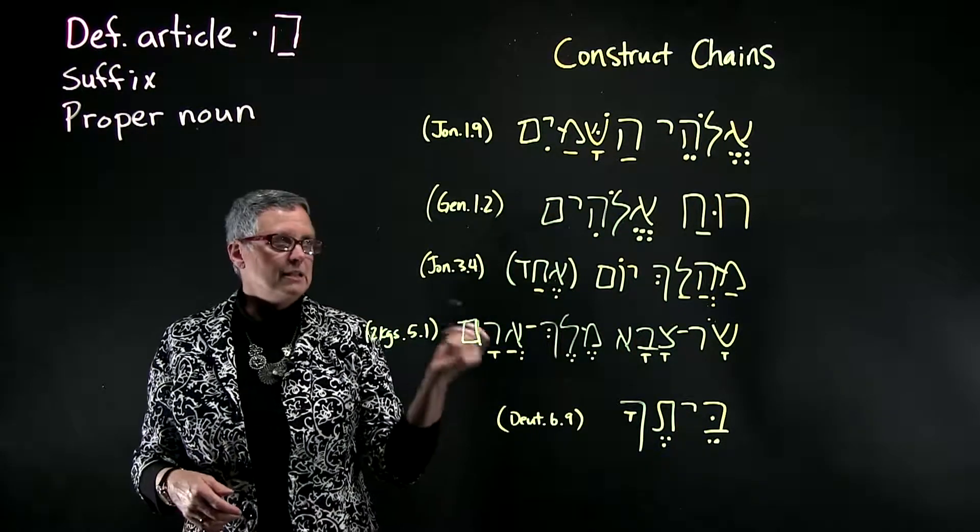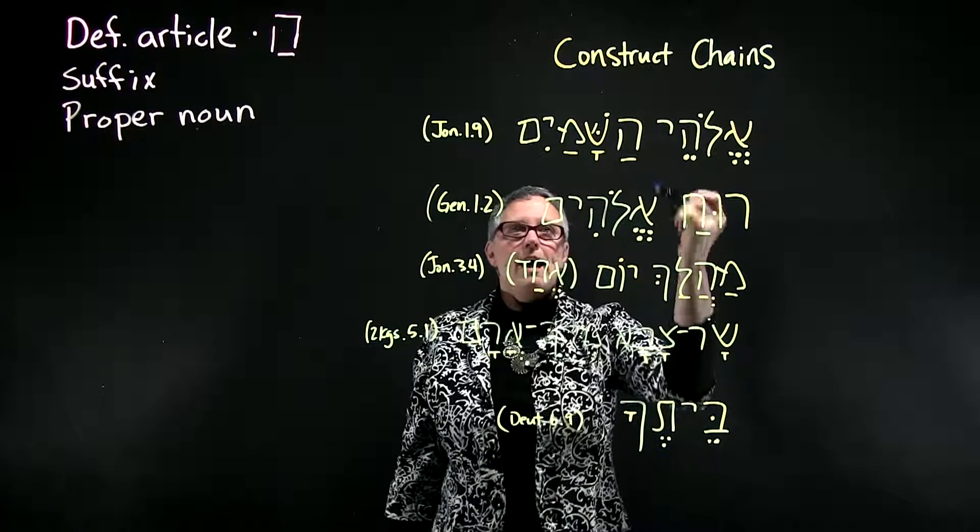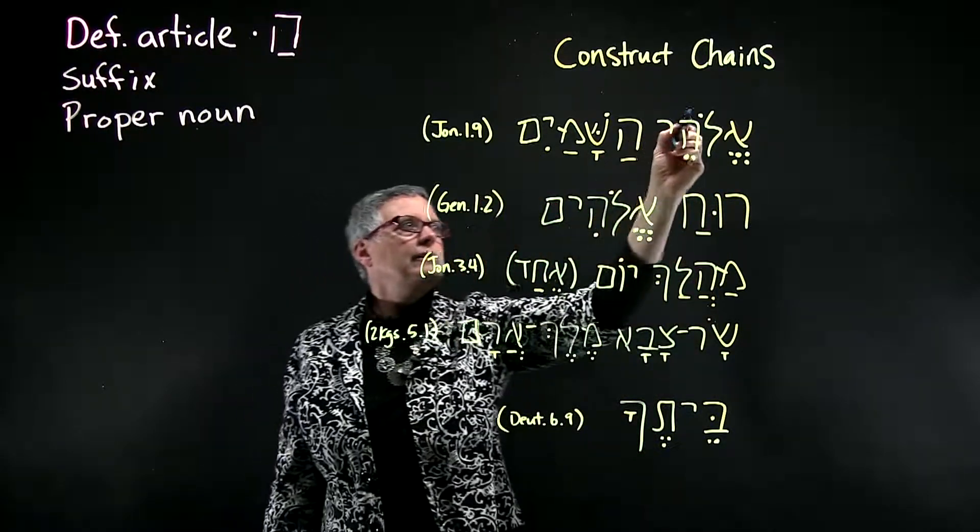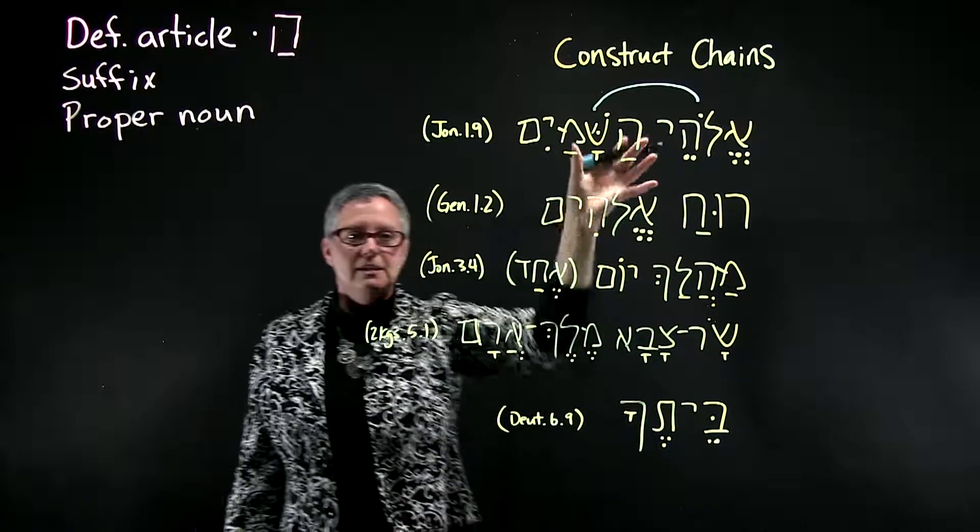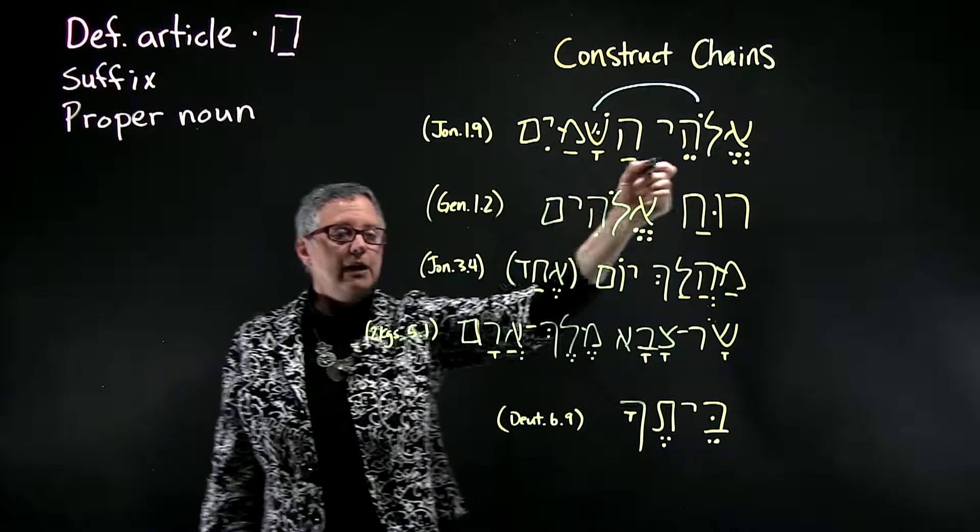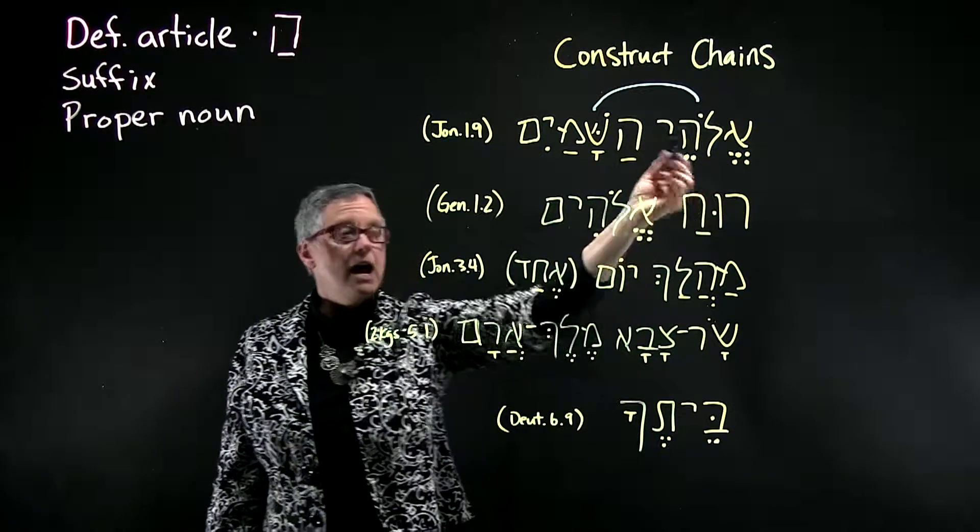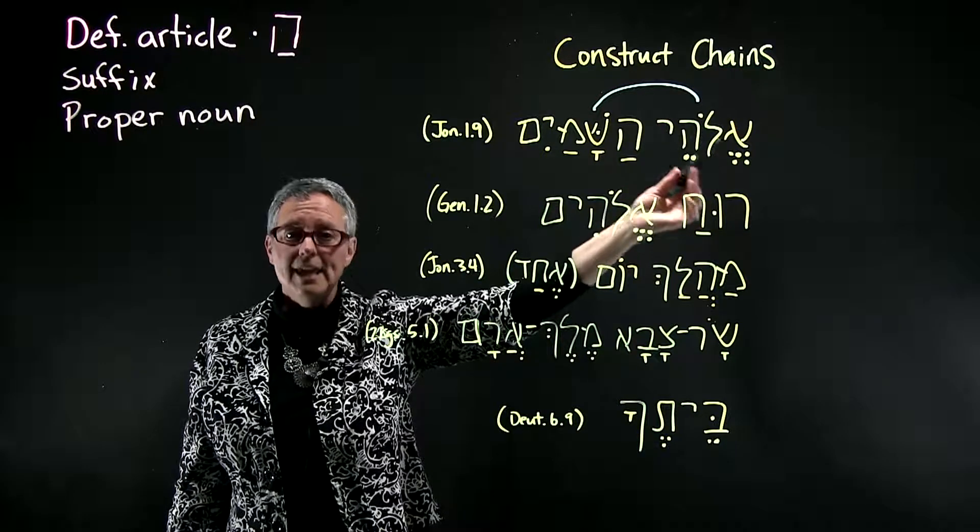So let's translate some of these construct chains. So Elohe Hashemayim. Elohe Hashemayim. These are both nouns, so this is a construct chain. Elohe is in construct form. It's the construct form of Elohim.